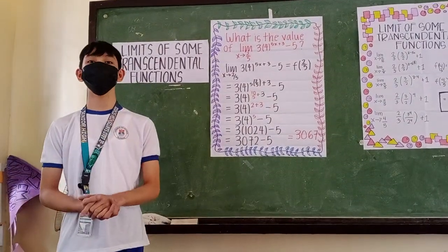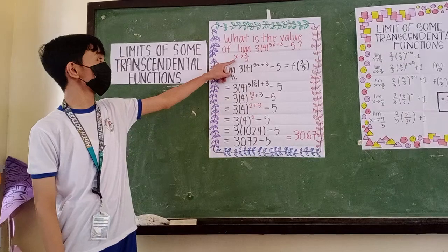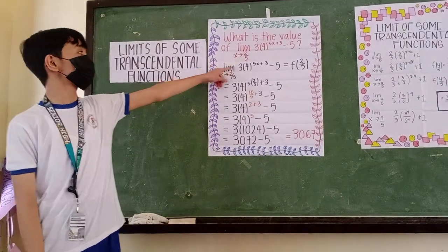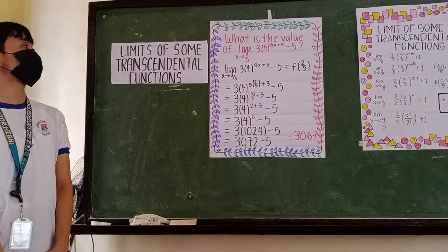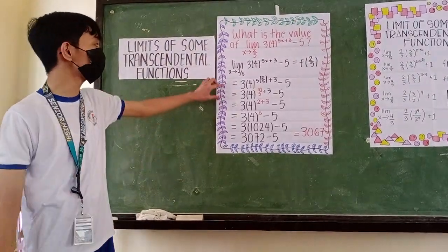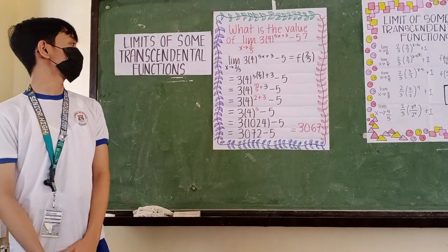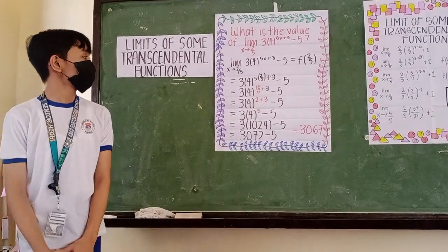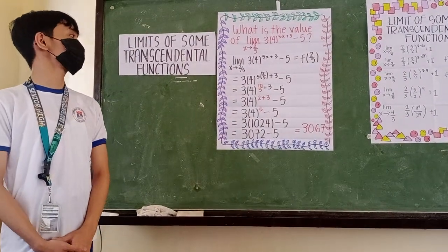We need to substitute the value of c or the value of a to our given argument. So, we need to evaluate 3 times 4 raised to 5 times 2 over 5 plus 3 minus 5.